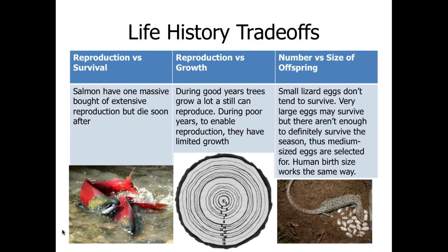Human birth weight works the same way. Very tiny babies are selected against because they tend not to survive. Very large babies are also selected against because, especially historically, the mother would not likely survive childbirth. So we have stabilizing selection for a medium-sized child, often somewhere between seven and nine pounds.